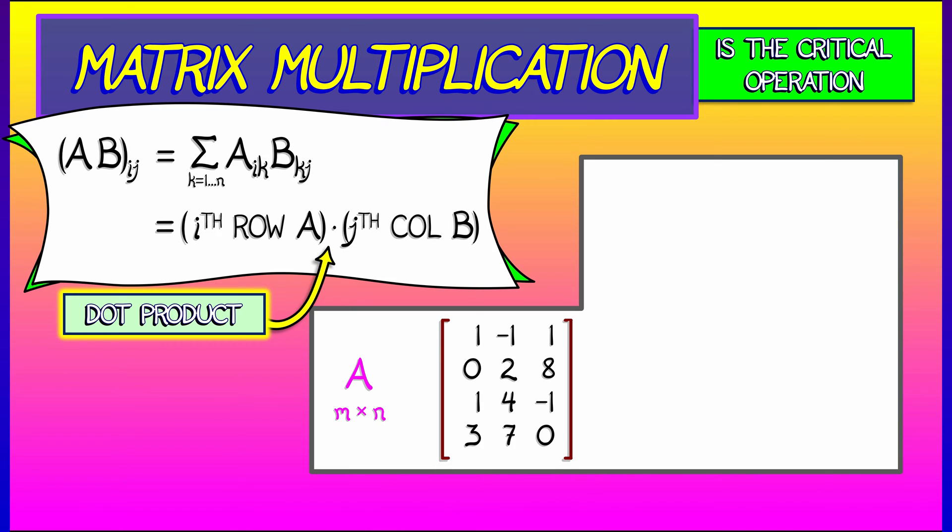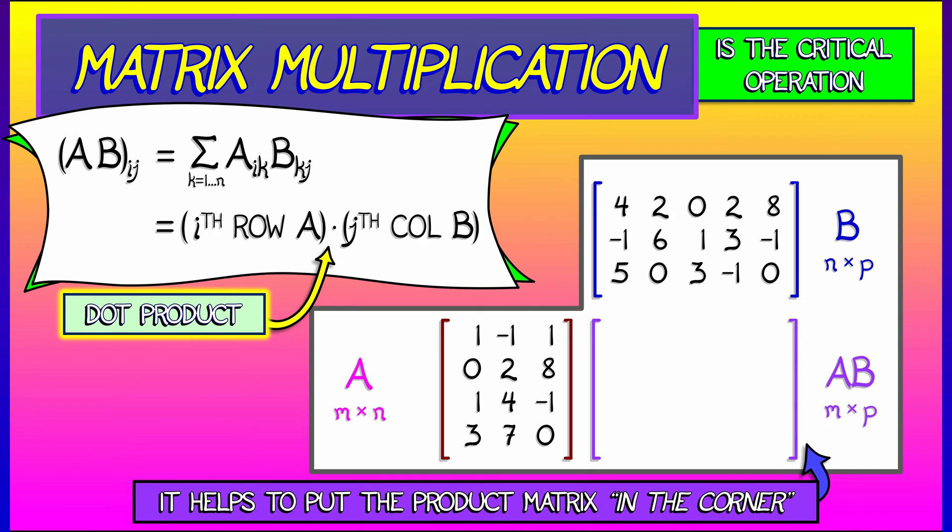So, for example, if A is an m by n matrix and B is an n by p matrix, then their product AB is really an m by p matrix.